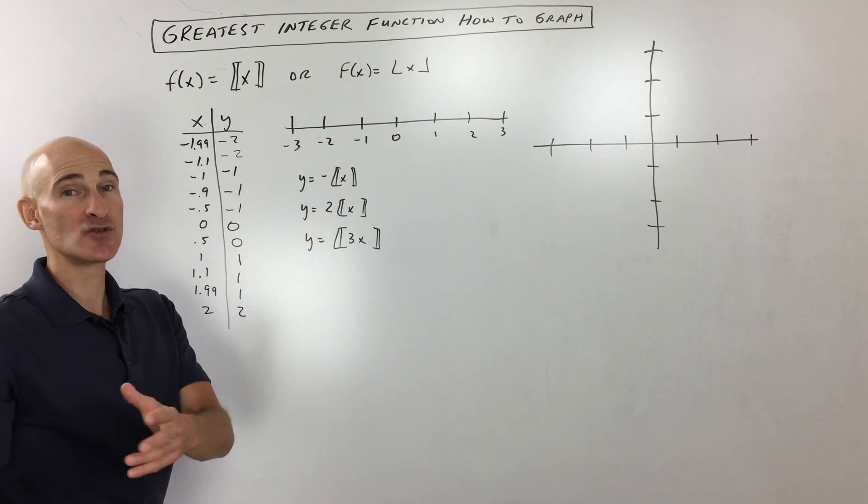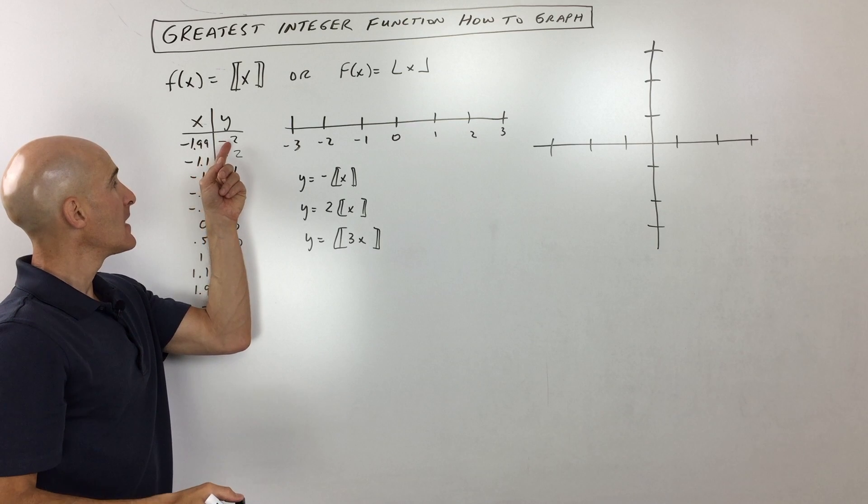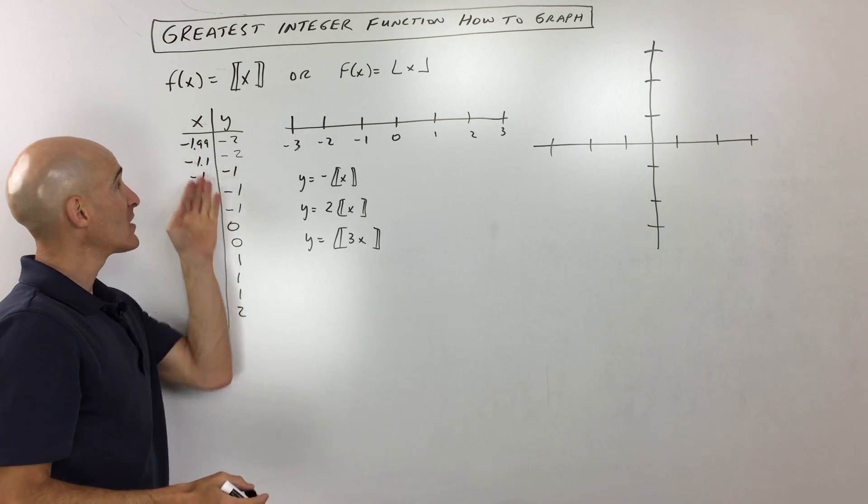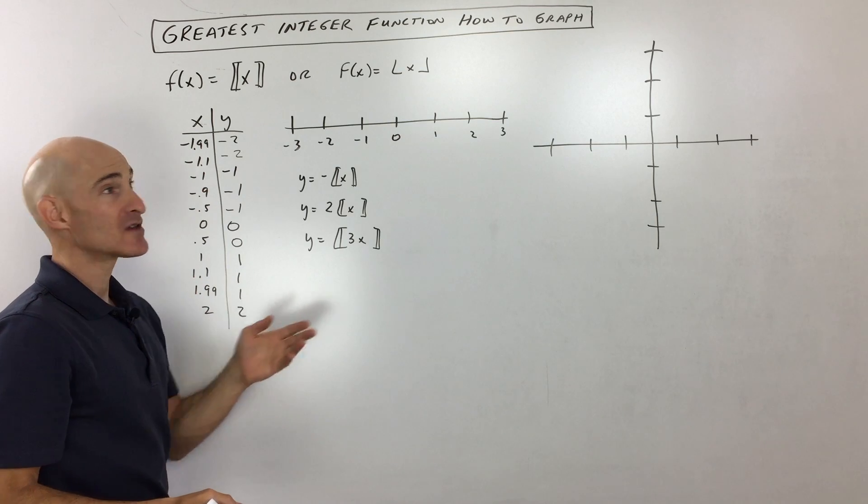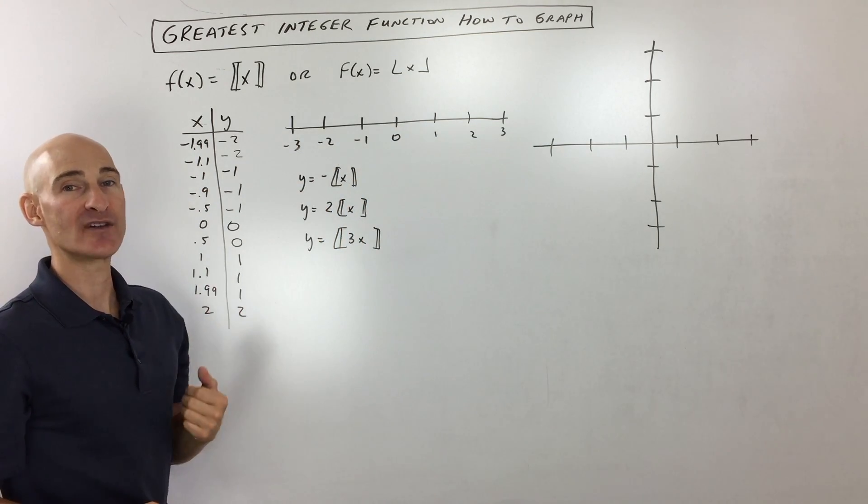Now, the reason I did this, and you might want to do this for yourself too as you're graphing this, is pick some values that are on the integer values and also in between integer values. Think of the number line and always round to the left, round down.